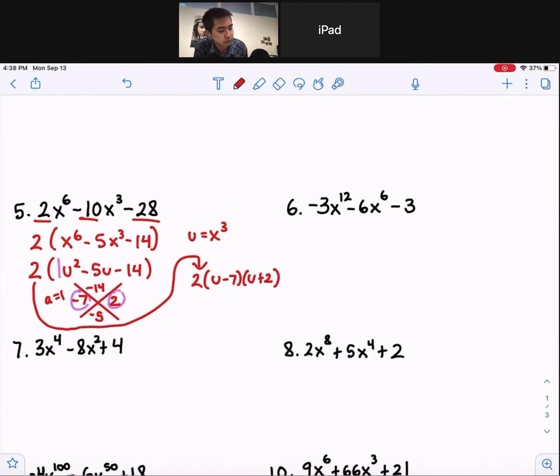we had x variables first. So just plug in x to the 3rd in for u: x to the 3rd minus 7, x to the 3rd plus 2.